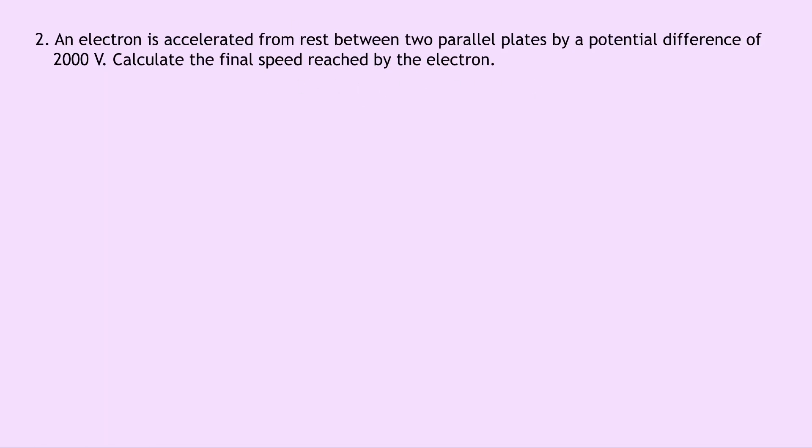Well a good starting point here is to find the work done on the electron because this is equal to the change in kinetic energy of the electron. And we know we're going to be dealing with kinetic energy here because we want to find a final speed. So writing down what we know from the question, we're trying to find the work done. We know the magnitude of the charge on an electron is 1.6 times 10 to the minus 19 coulombs and the potential difference V is 2000 volts between the plates. Also we can say that the mass is 9.11 times 10 to the minus 31 kilograms for an electron. And we're also trying to find in this question the final speed V.